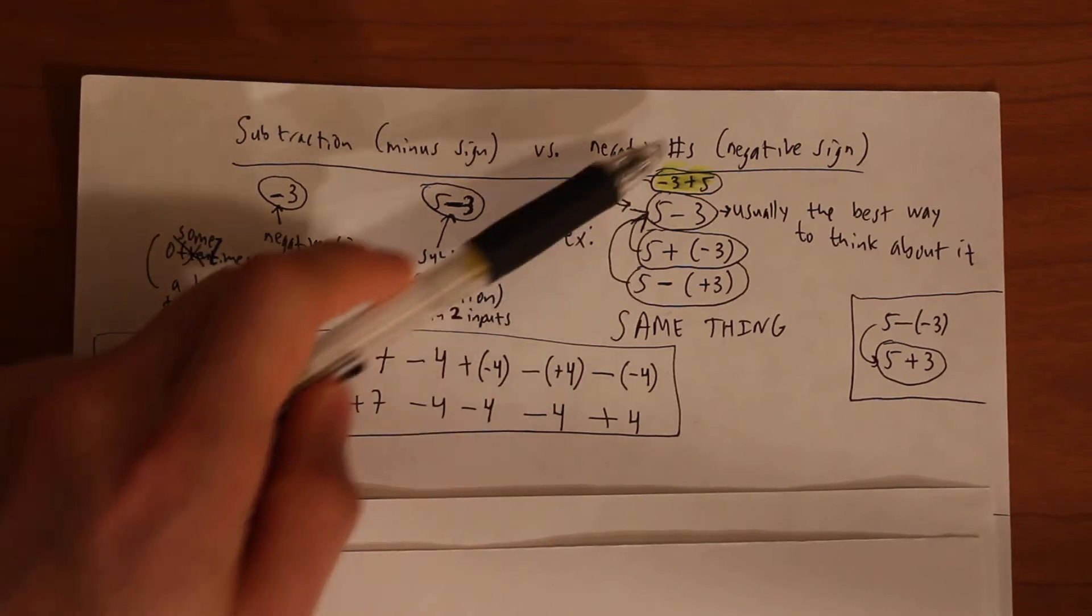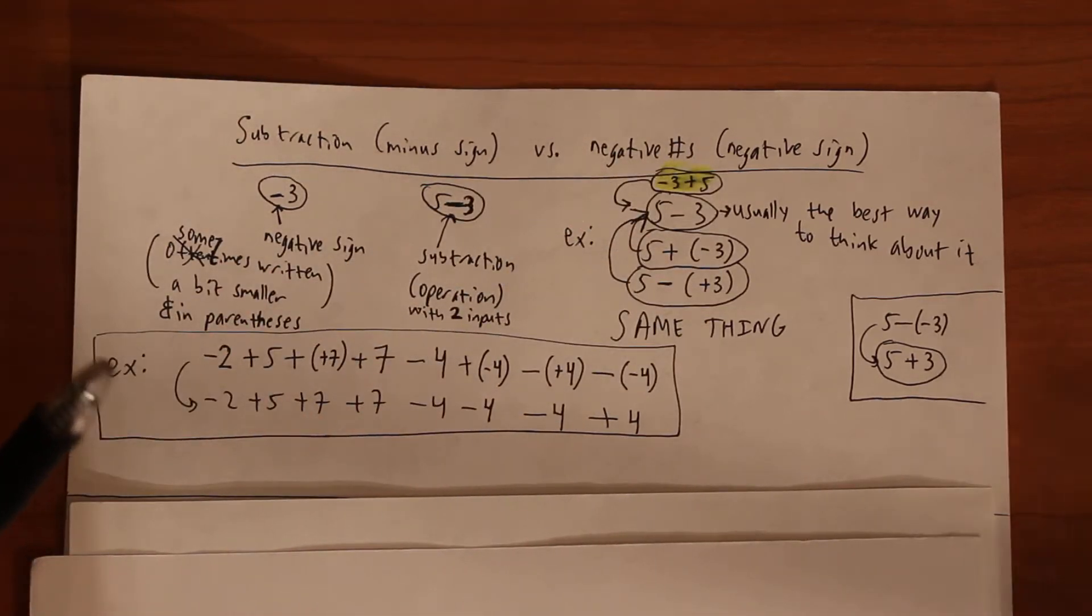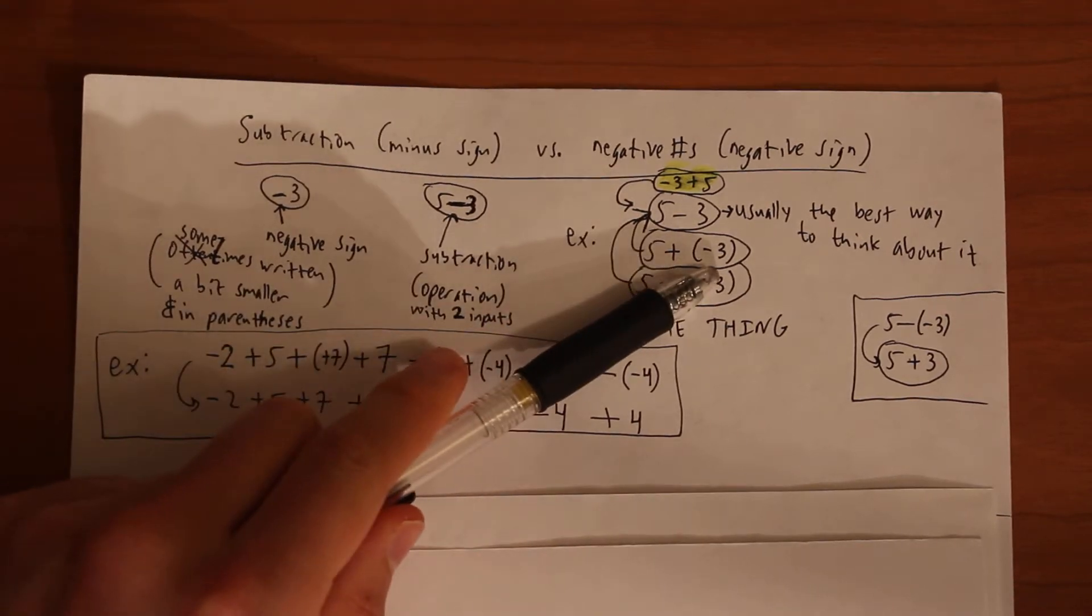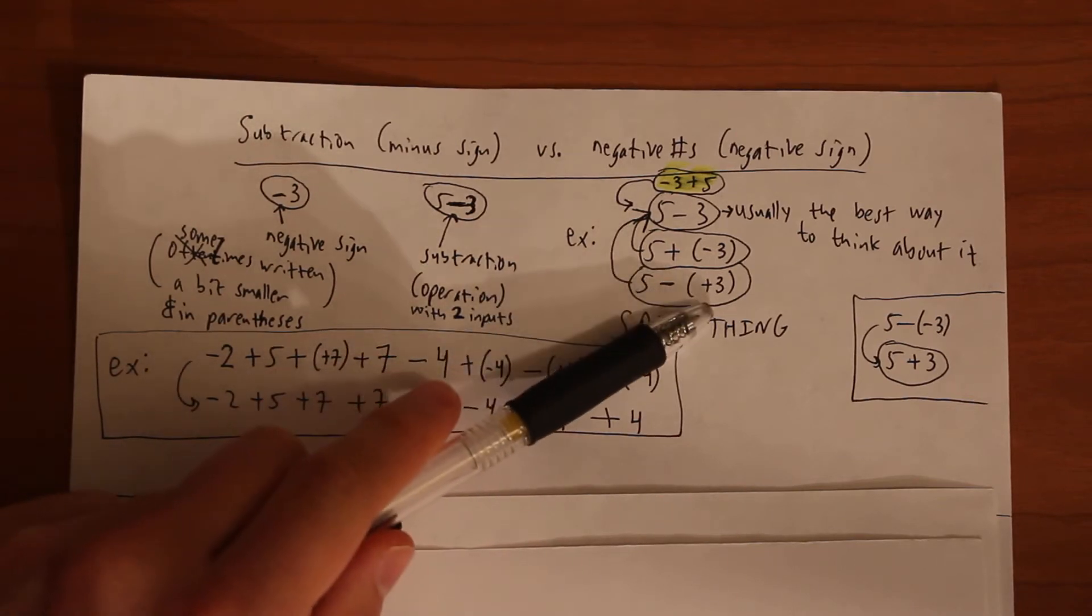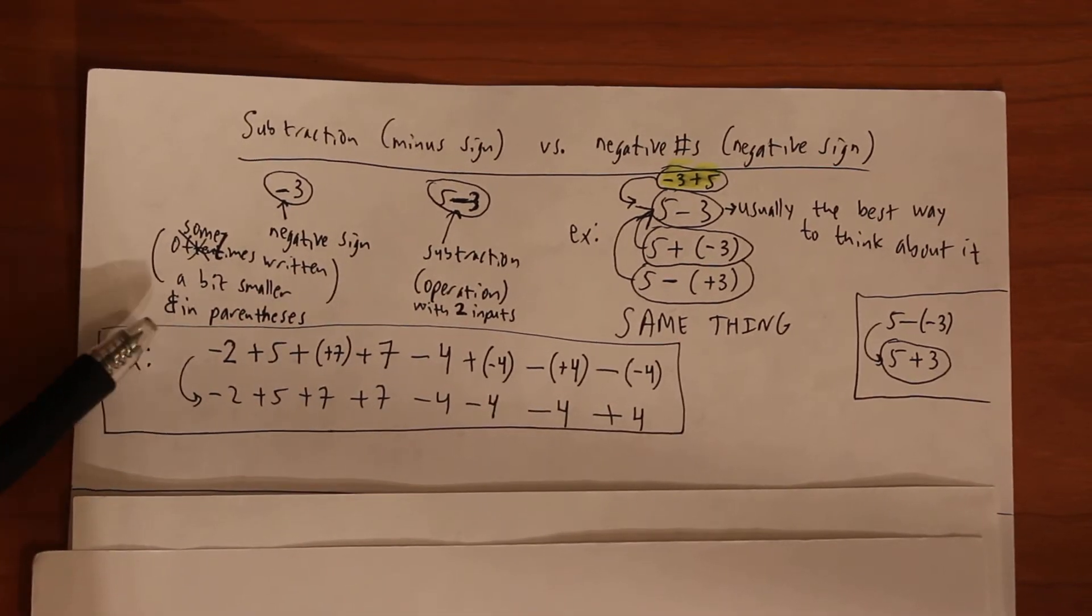So and then by using these four that we said are the same, you can basically, and your general knowledge of negative numbers, we know that for example adding a negative is the same thing as just subtracting a 3, or subtracting a positive is just subtracting the 3 again. So we'll convert this crazy looking thing into a simplified version.